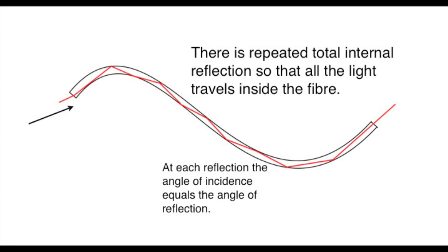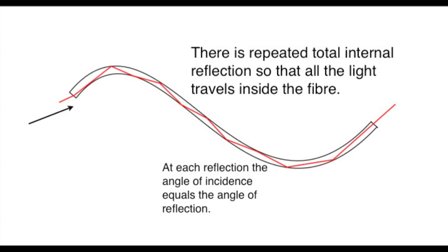The angle of incidence of the light must be less than the critical angle. A fine fibre helps to ensure that this is so. As the light enters and leaves the fibre, there is bound to be some refraction.